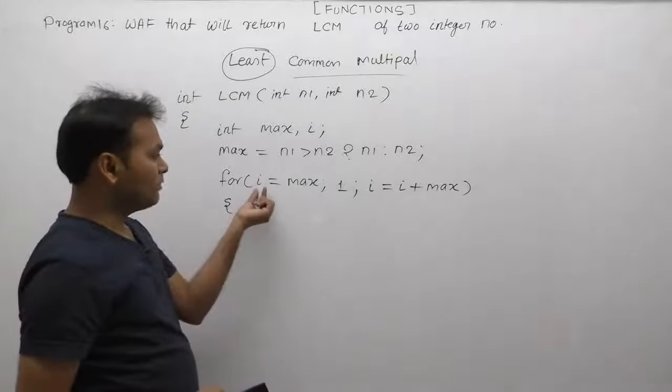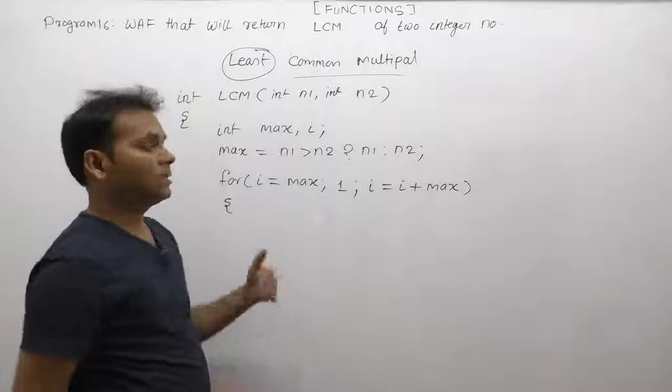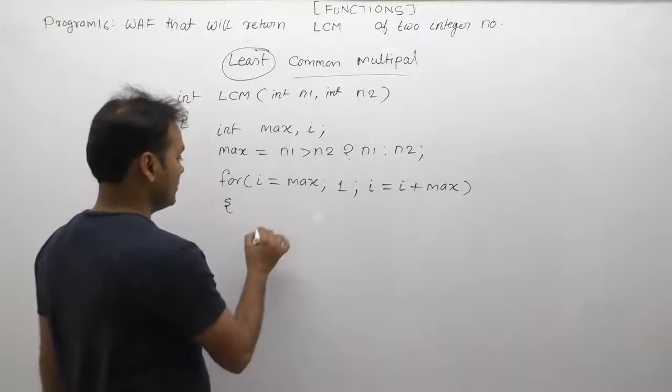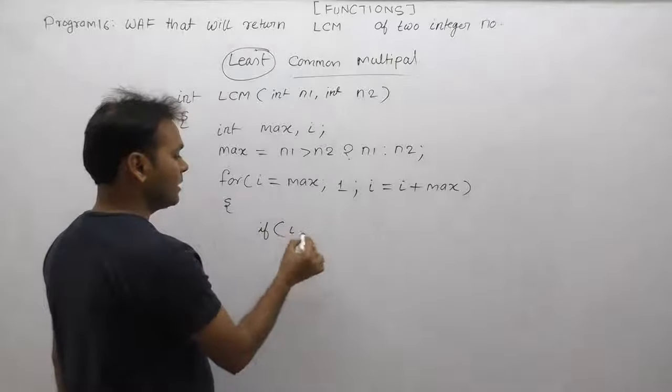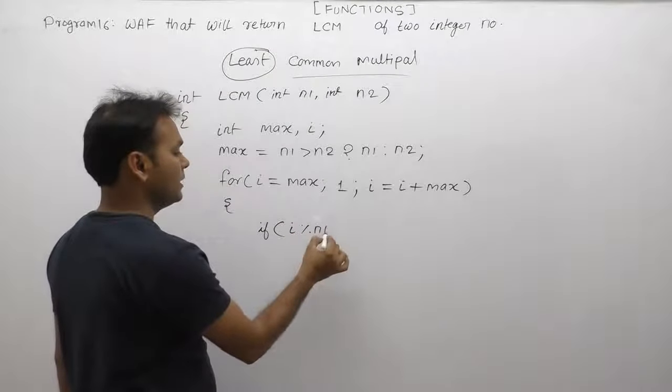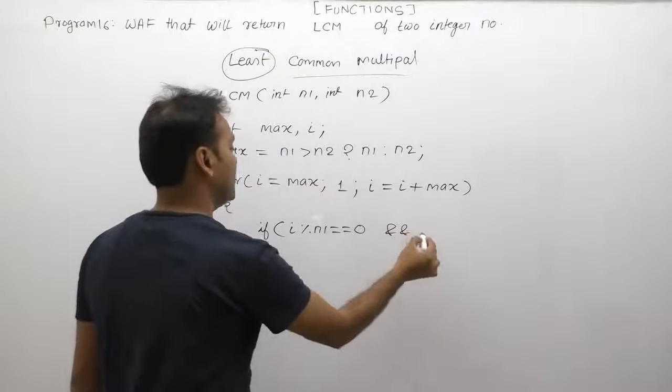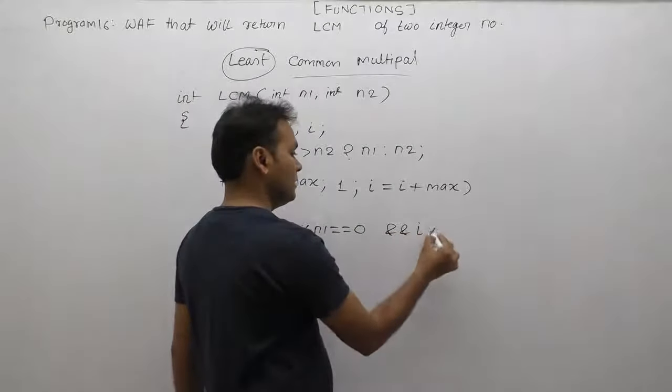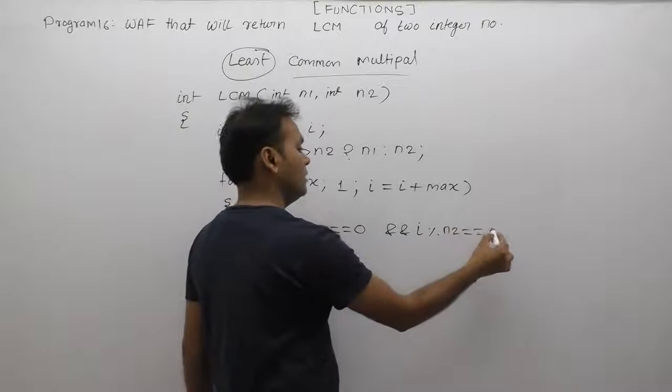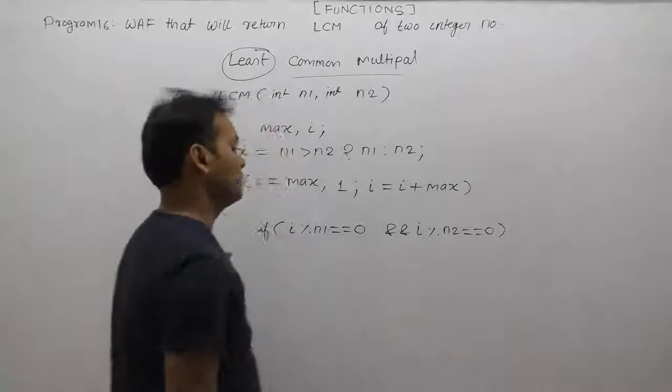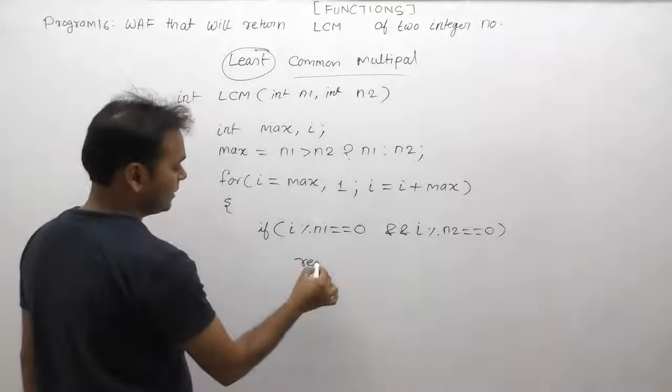If the value of i is a multiple of n1 as well as n2, then this number is the LCM. We check: if i mod n1 equals 0 and i mod n2 equals 0, then i is divisible by both. If this condition is true, we immediately return i.